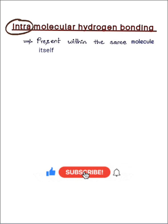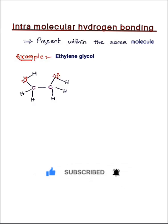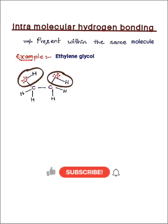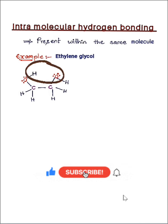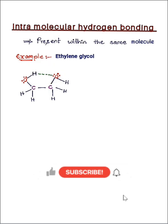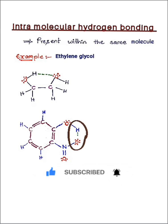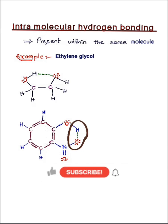We take ethylene glycol as an example. It has hydrogen covalently bonded to oxygen on both ends of the same molecule. The attraction between the oxygen of one end and the hydrogen of the other end is called intramolecular hydrogen bonding. Here is another example where we notice the attraction between hydrogen and oxygen happens within the same molecule — that is intramolecular hydrogen bonding.